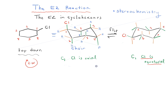Remember what this means for the E2 reaction. What's going to be important about E2 is that we need an anti-periplanar — sometimes called anti-coplanar — relationship between the leaving group Cl and the hydrogen that we're removing. So I'm going to draw Newman projections.